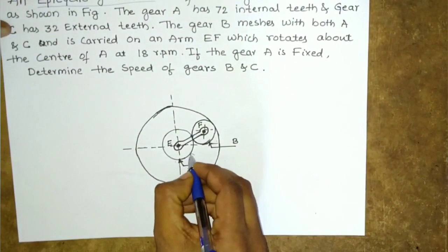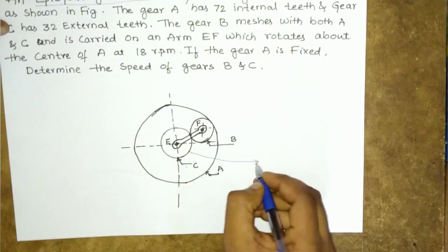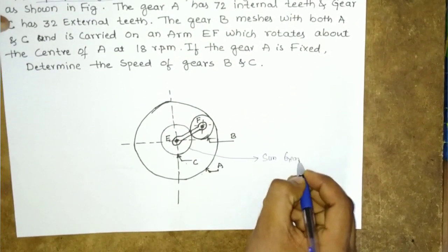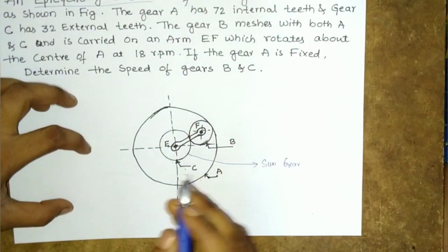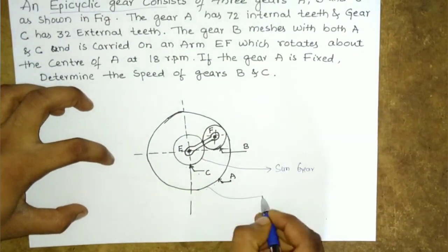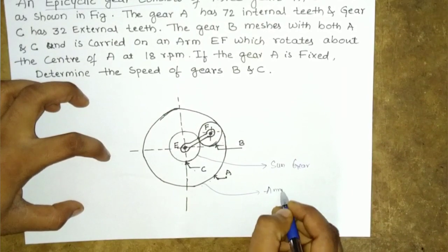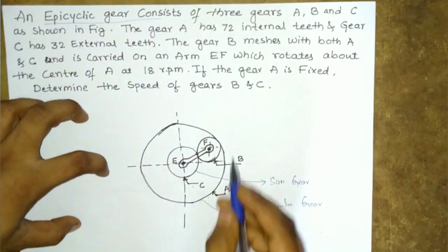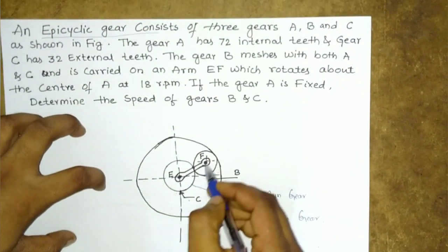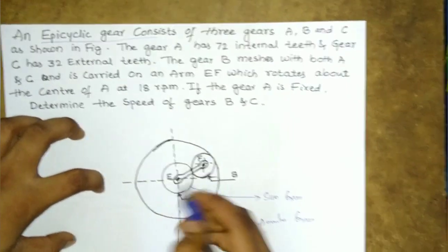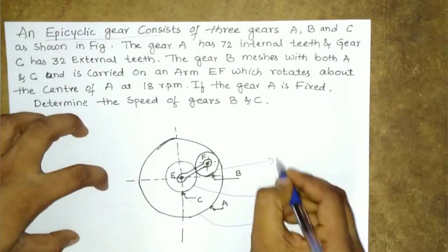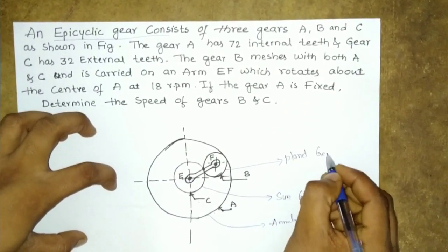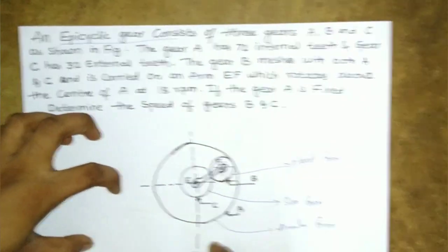This is a problem related to epicyclic sun and planet gears. The sun gear always remains at the center. The larger red gear is called the annulus gear. Gear B rotates about the sun gear, and since planets revolve around the sun, it is called the planet gear.